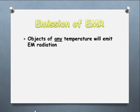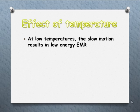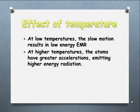It's been known for hundreds of years that objects of pretty much any temperature will emit EM radiation. It's not until they get to significant temperatures that we can actually start to see it as light. It's the vibrating atoms that are causing these EM waves to be given off. At low temperatures the motion is quite slow, so the result is generally really low energy electromagnetic radiation which is not going to be visible. As temperatures increase, there's greater acceleration within the atoms and their vibrations, so they emit higher energy radiation.